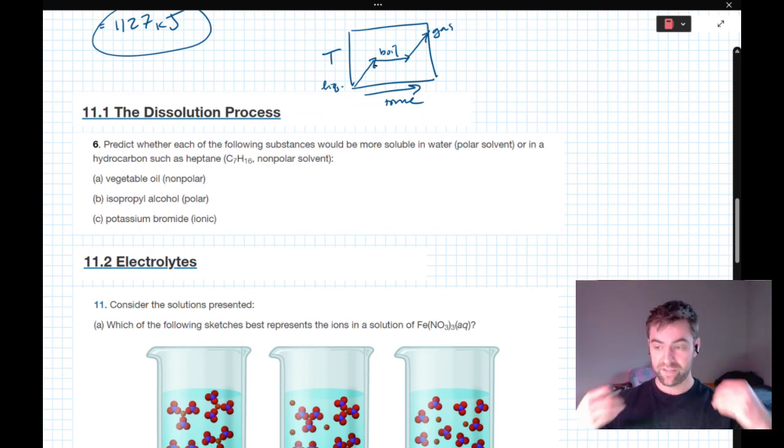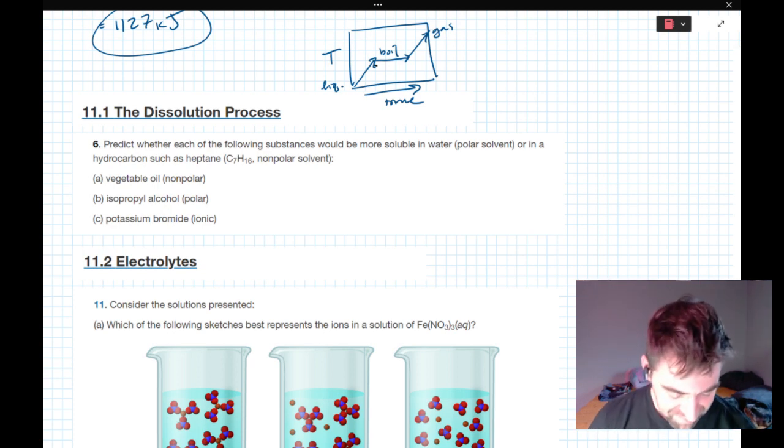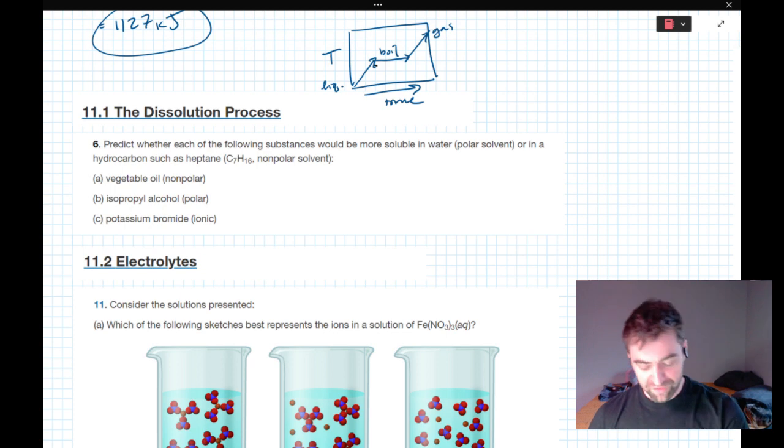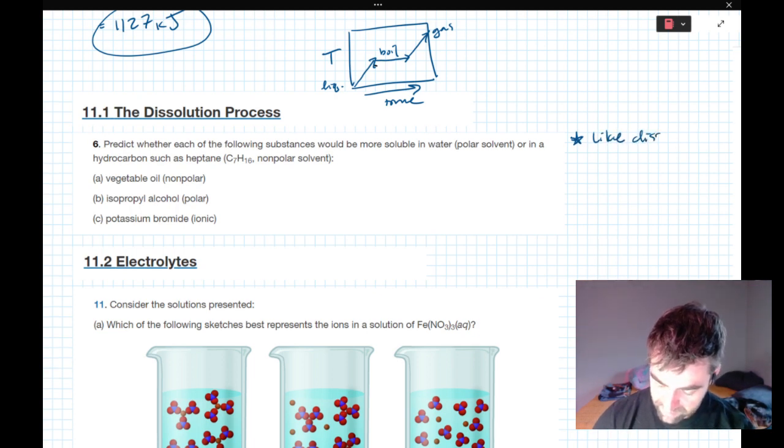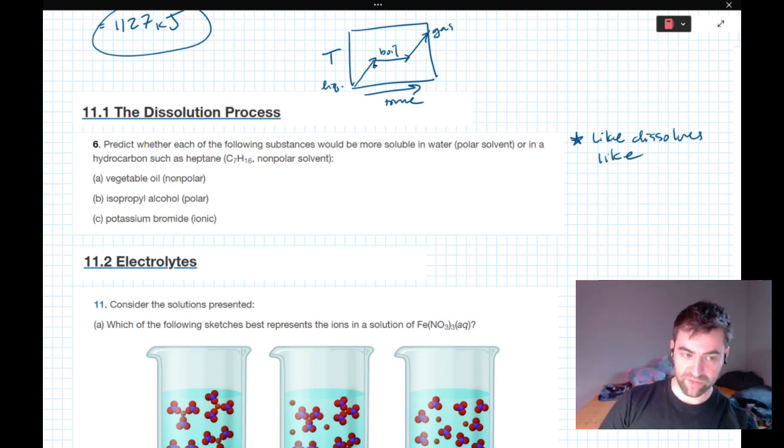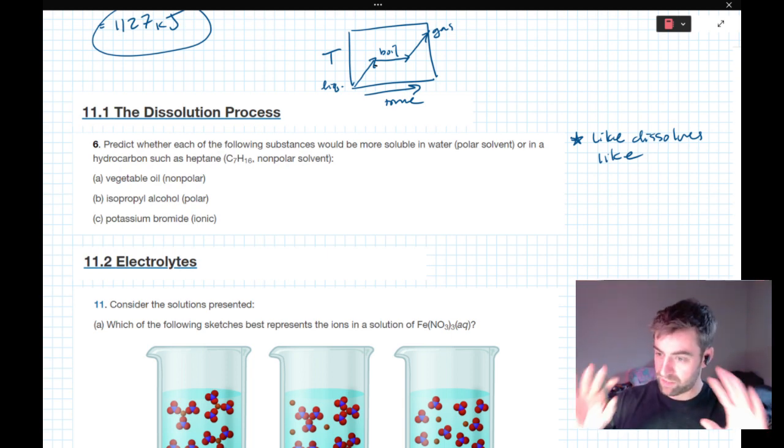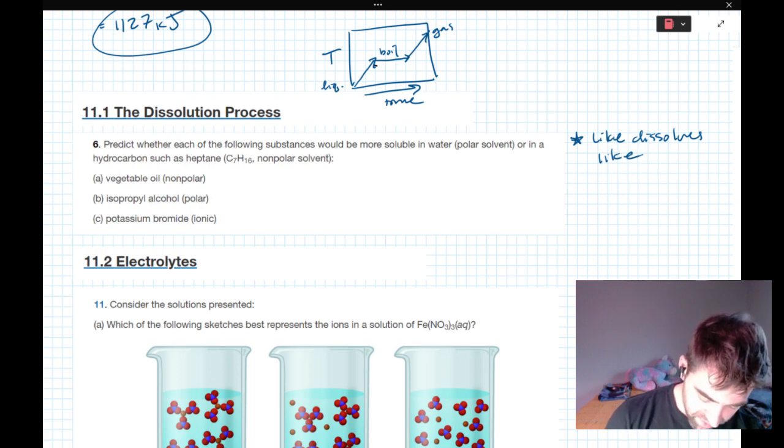All right, so now we're on to chapter 11. We're talking about solutions, so solids in liquids and how those behave. Predict whether each of the following substances would be more soluble and is more likely to dissolve in water, which is a polar solvent, or in a hydrocarbon such as heptane, which is a non-polar solvent. All you need to remember here is that like dissolves like. So polar solvents will dissolve polar molecules. Non-polar solvents will dissolve non-polar solutes. So vegetable oil is our solute. It is non-polar. It has those long hydrocarbon chains and those lipids. So this would be dissolvable in heptane because it is non-polar.